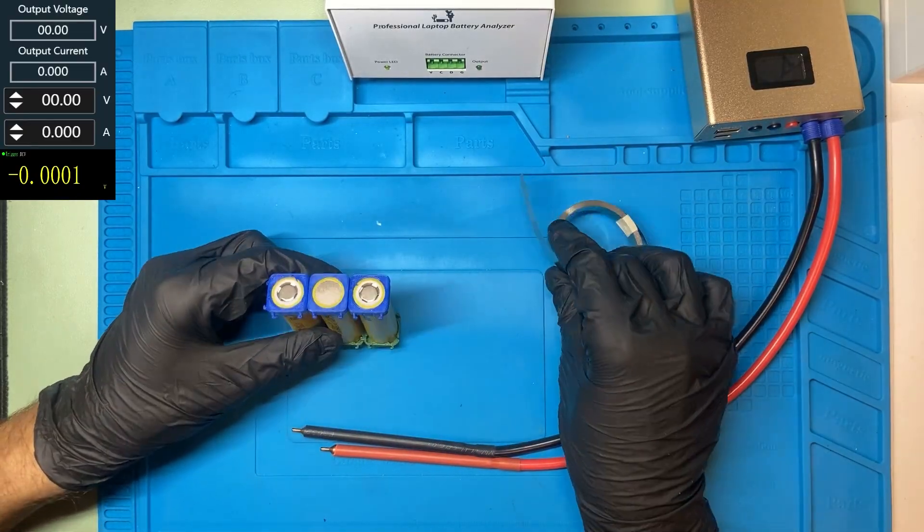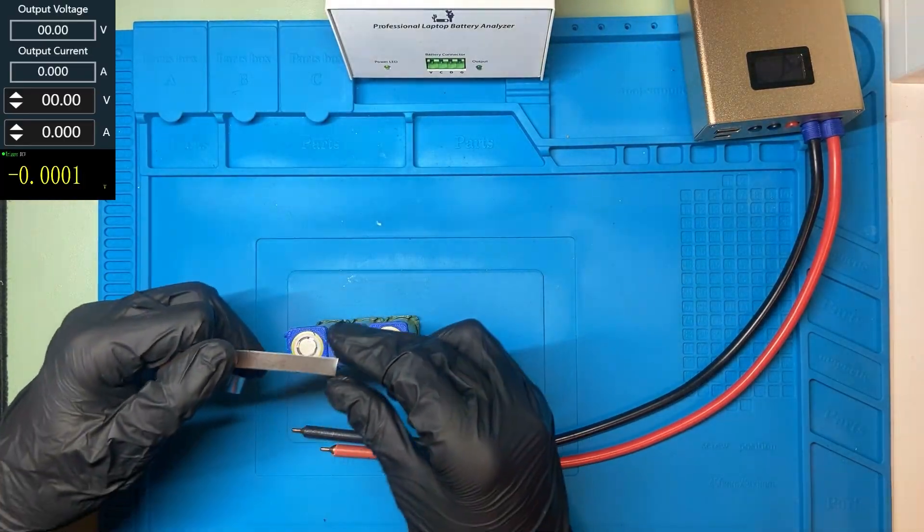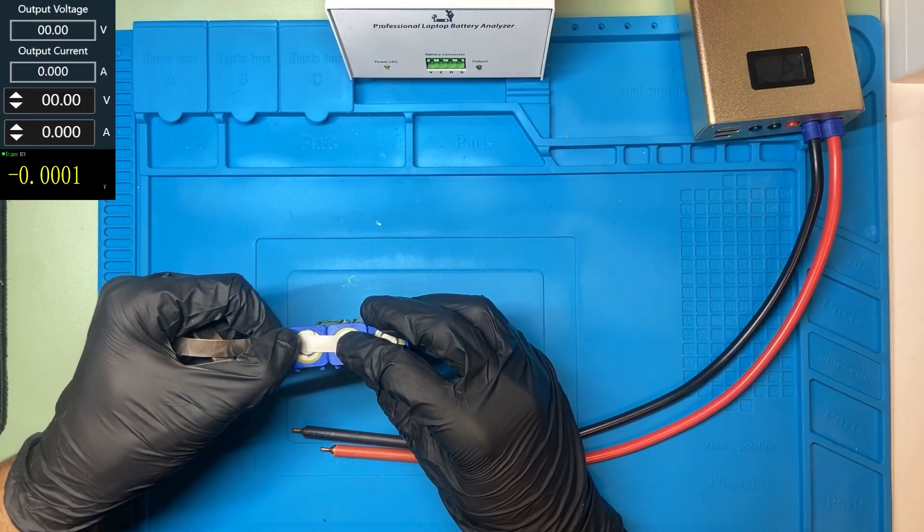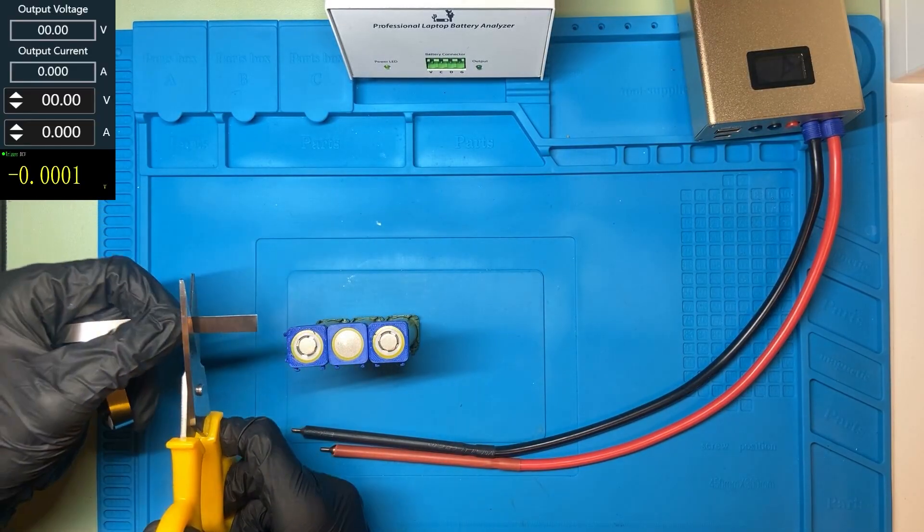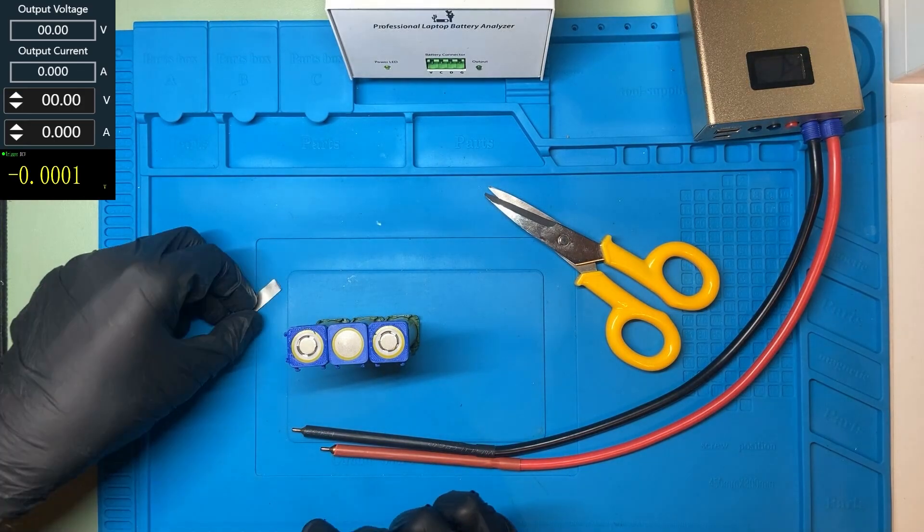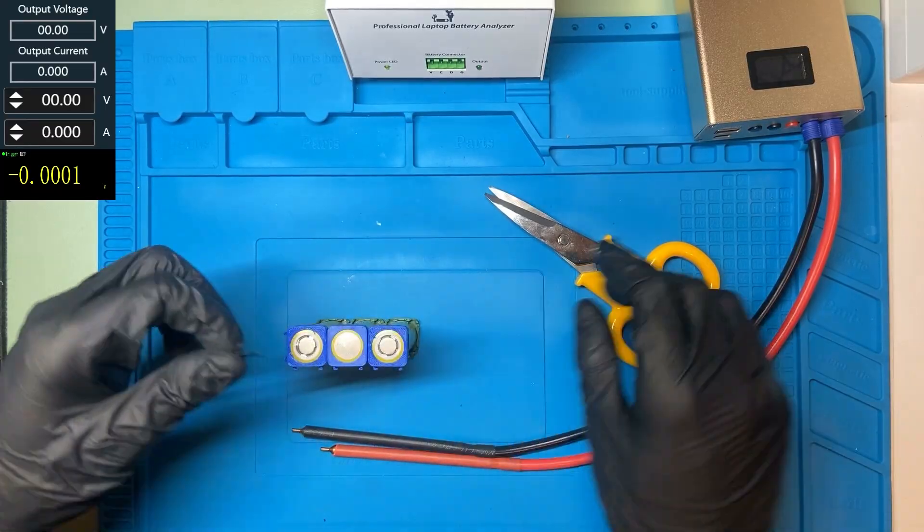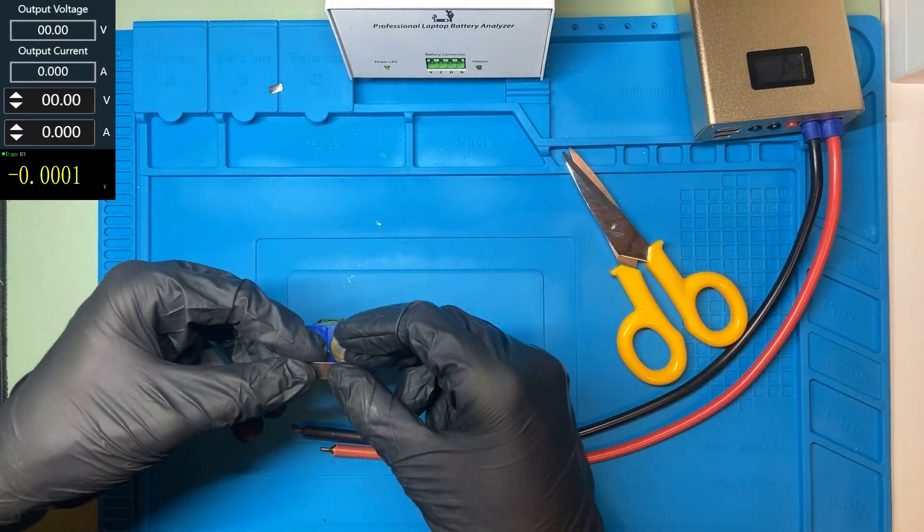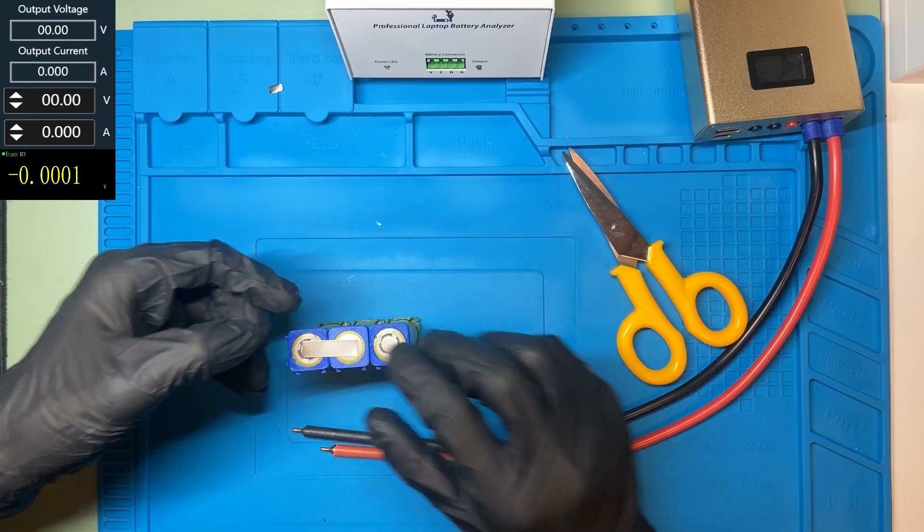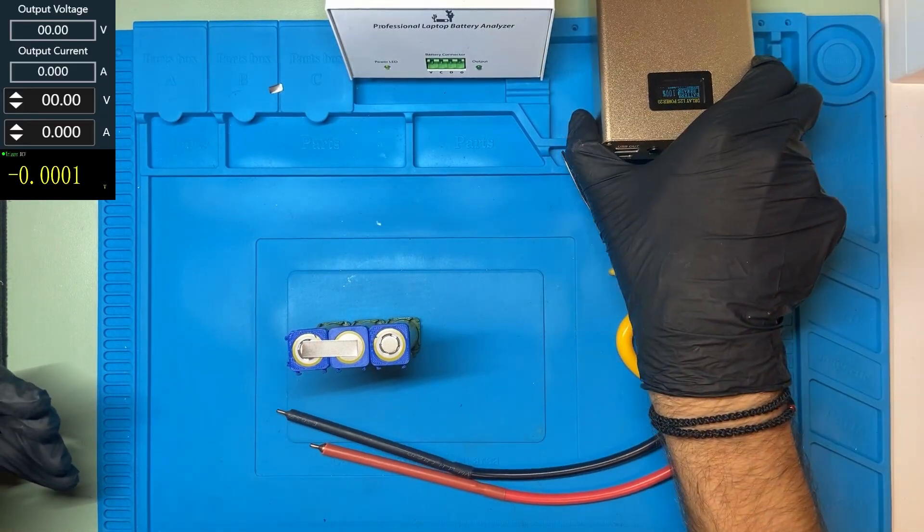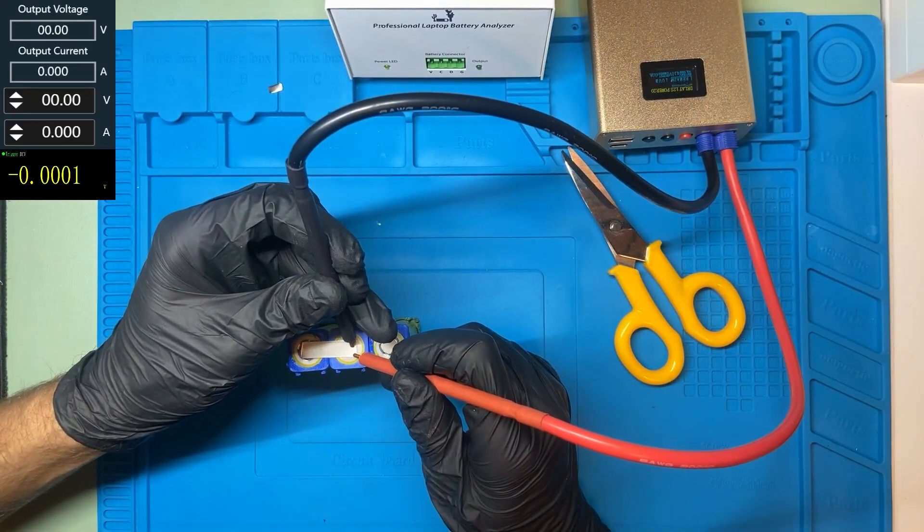Let's start soldering the cells together. We are going to measure exactly. Here we are going to need a scissor to cut the piece. I think it's too big. That's very, very good. We are going to start this machine. It's very easy to use. Just place one probe here.